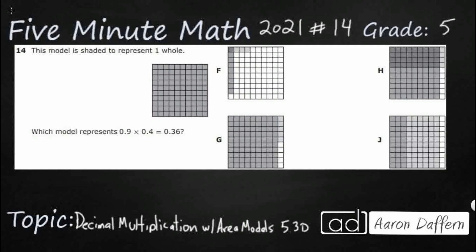This is kind of a difficult problem because they actually give us the problem and the answer. So 0.9 times 0.4, or 9 tenths times 4 tenths, equals 0.36, or 36 hundredths. We just need to find the model that represents that. We have different shades of darkness — light, medium, and dark gray — that we have to differentiate between, and we need to find the one that matches.